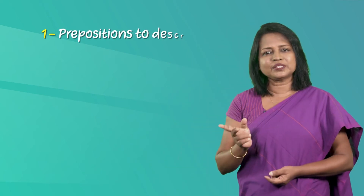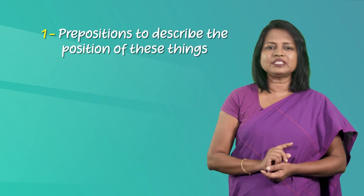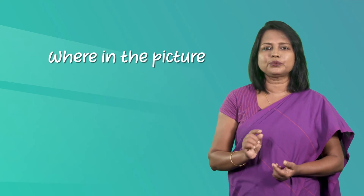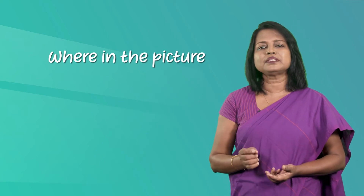Children, now we are going to move on to the second step. We are going to write sentences describing these objects, animals and people. You need to know two things before you write sentences describing what is in the picture: prepositions to describe the position of these things, and grammar structures to write sentences. We can make use of prepositions to show where in the picture you can see the objects, animals or people.